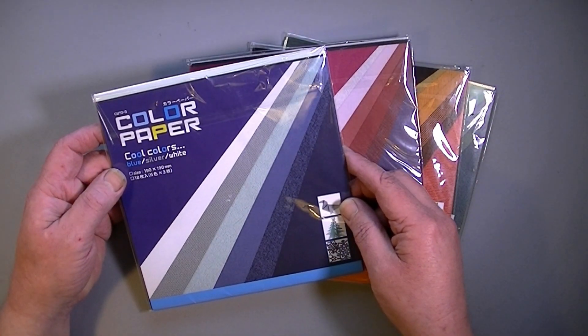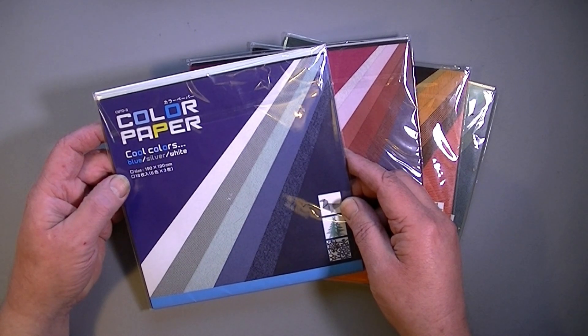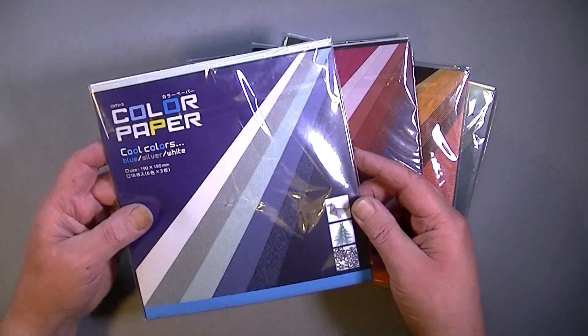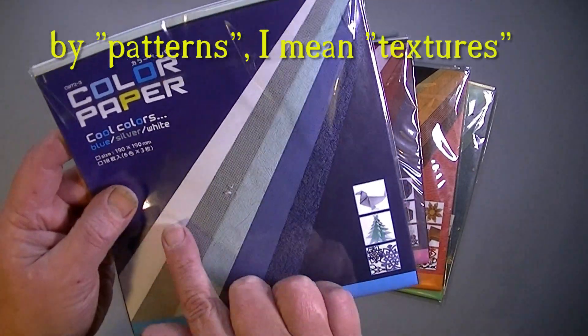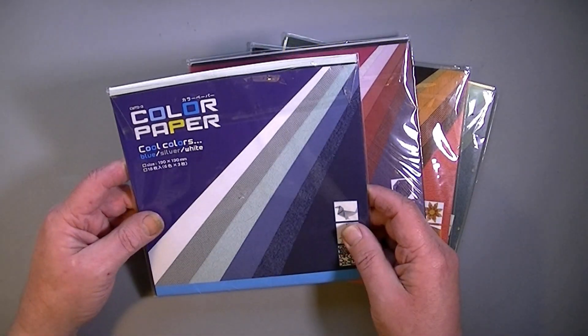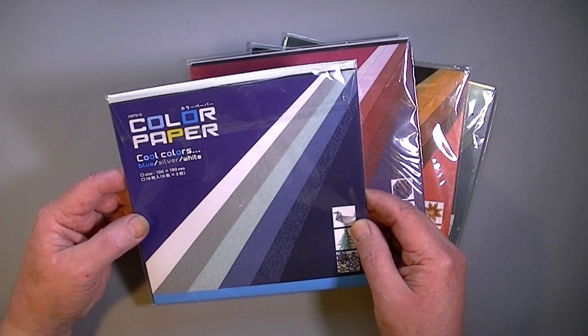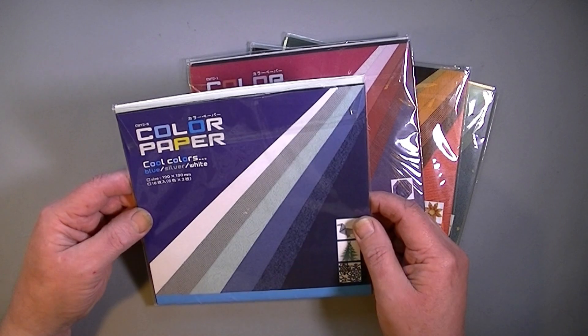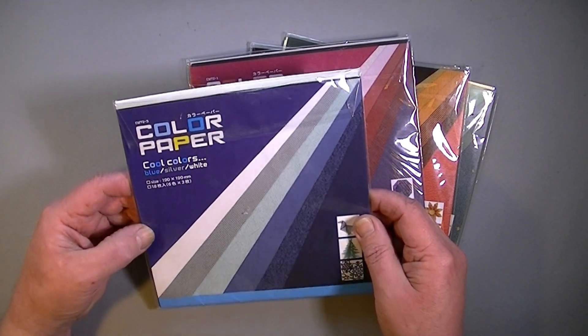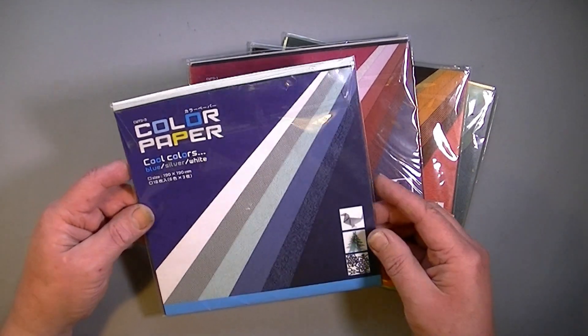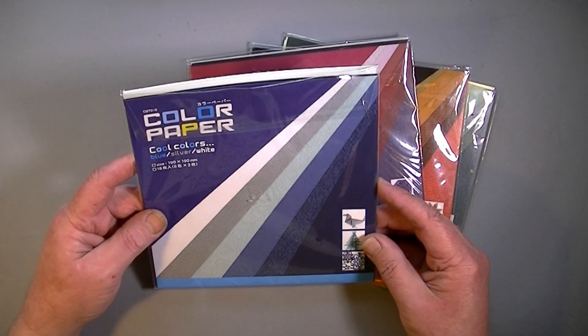So it's 19cm squared and you get 18 sheets per pack - three sheets of each of six different patterns, and you can see the patterns on the front. It makes a change from all the normal, boring origami paper which is colored on one side, plain on the other. Most folders I know like to use paper that's got a bit of texture to it, and this indeed has.